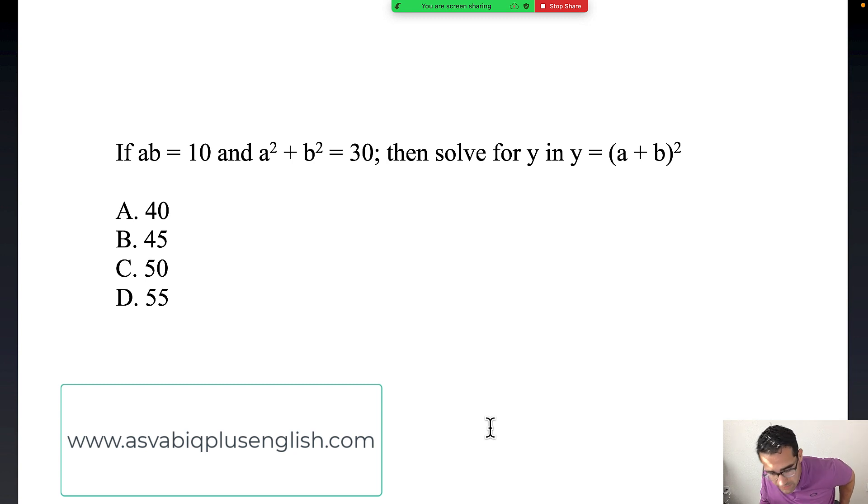But anyways, we're going to look at it and I'm going to give you the hint. They're telling you ab equals 10, a exponent 2 plus b exponent 2 equals 30, and then they want you to solve for y and they're giving you this equation.